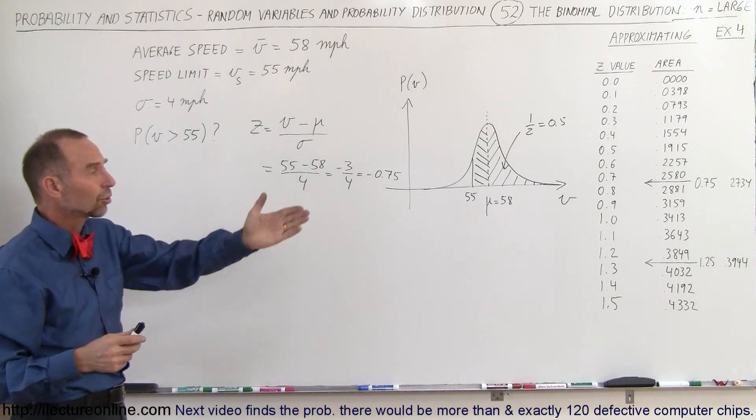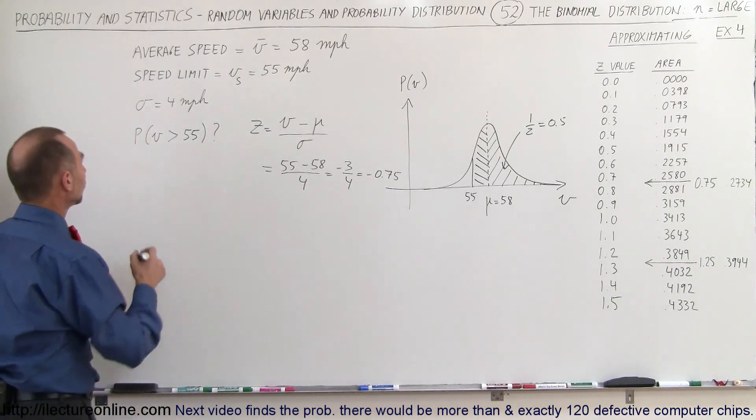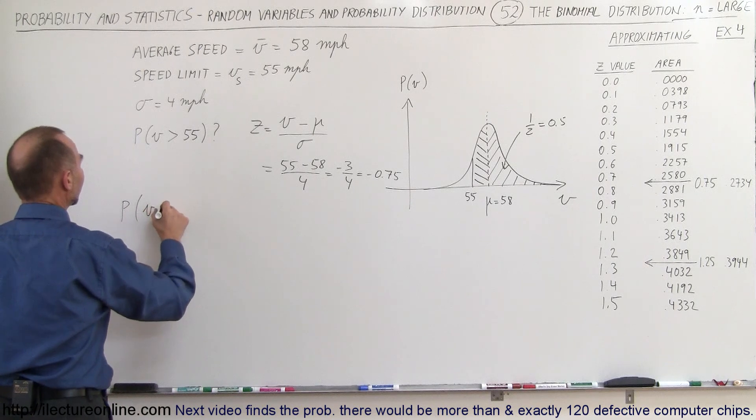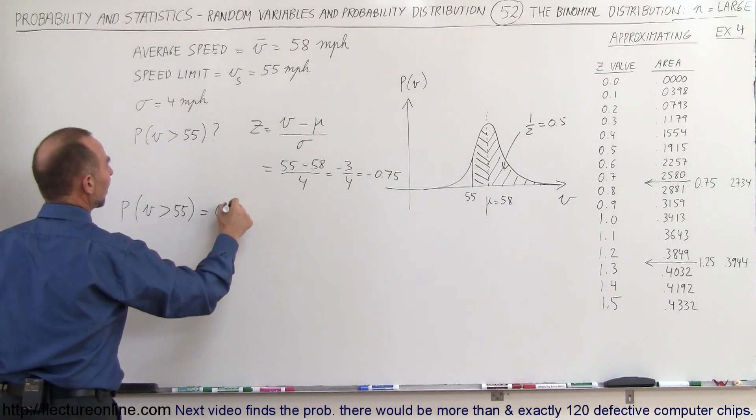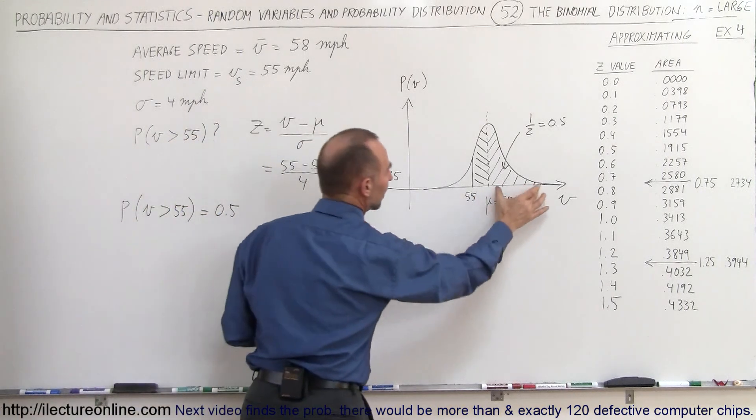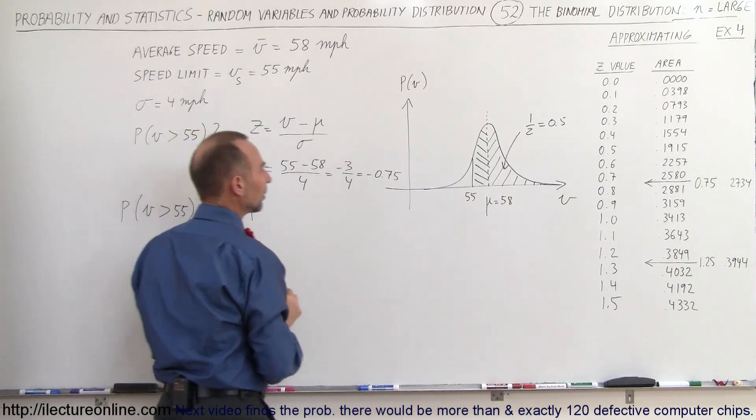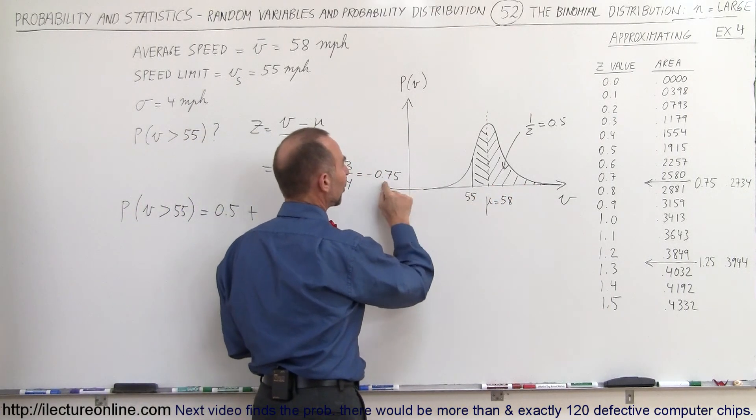Looking at the curve, we know what we're doing here. We can say that the probability of finding a velocity greater than 55 miles per hour is equal to 0.5, which is this area here, plus the area corresponding to a Z value of 0.75.